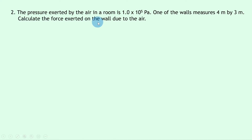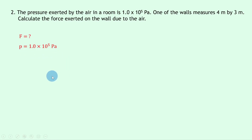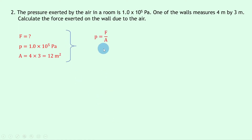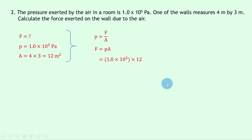Question 2 says that the pressure exerted by the air in a room is 1.0 times 10 to the 5 pascals, which is also atmospheric pressure. One of the walls measures 4 meters by 3 meters. Calculate the force exerted on the wall due to the air. The pressure p is 1.0 times 10 to the 5 pascals and the area equals 4 times 3 which equals 12 meters squared. Writing our equation p equals f over a, rearranging gives f equals pa. Substituting in gives 1.0 times 10 to the 5 times 12, which gives an answer of 1.2 times 10 to the 6 newtons.